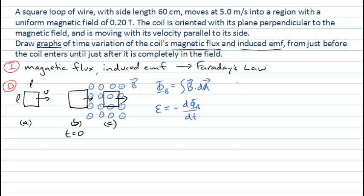Let's consider situation A: what's the magnetic flux when the coil is completely outside the field? That should be reasonably easy to calculate. Because B here is zero, and the integral of zero will just give me zero. So that's a fairly easy one.